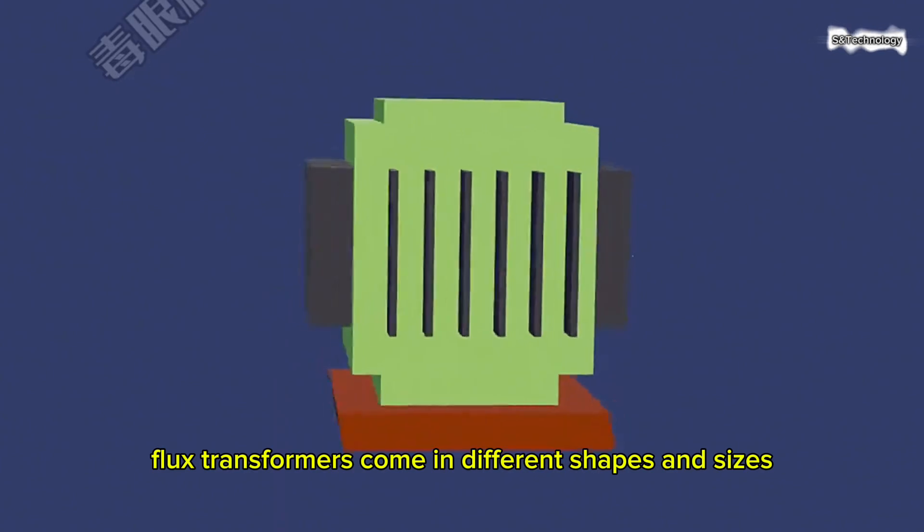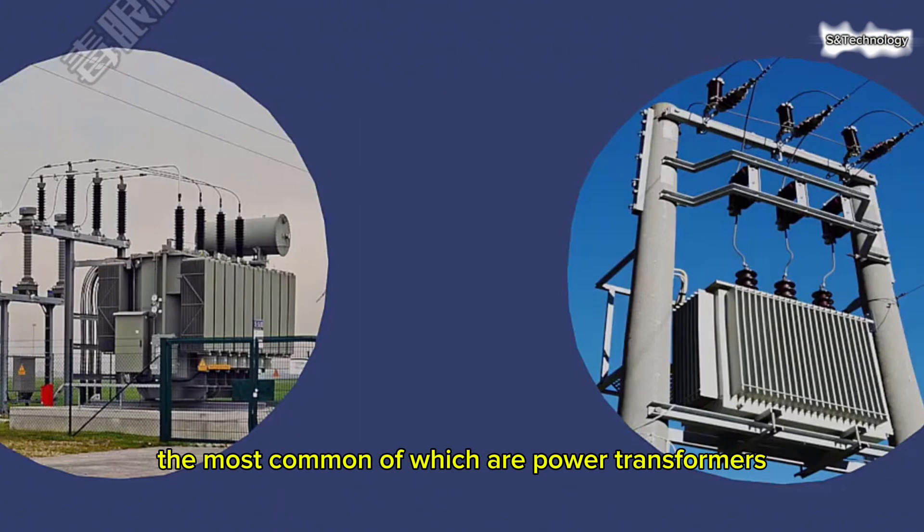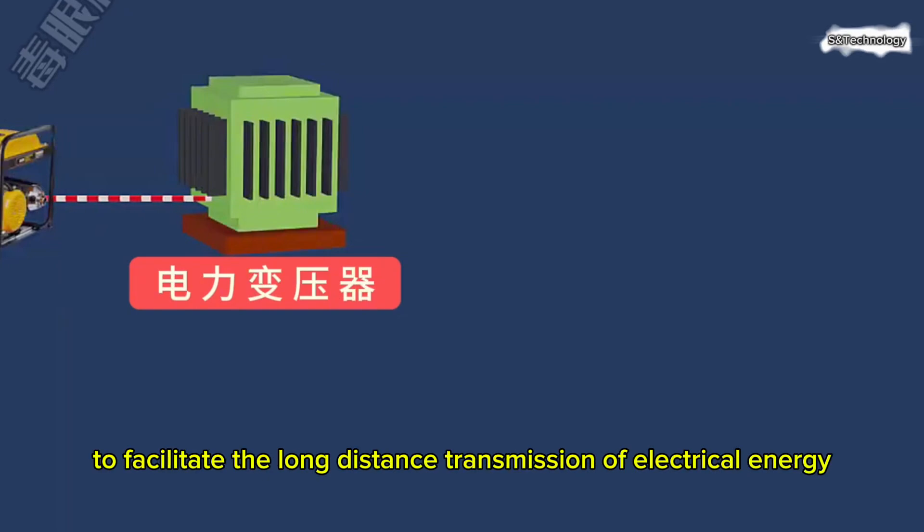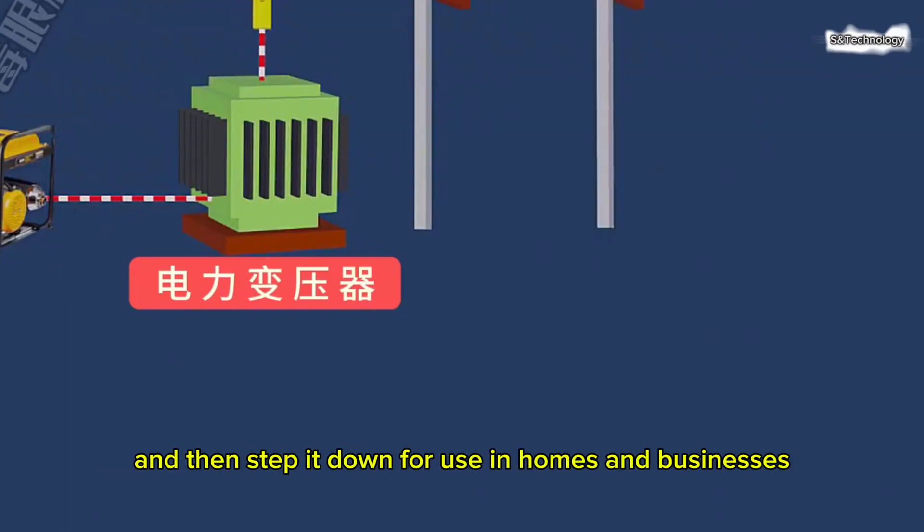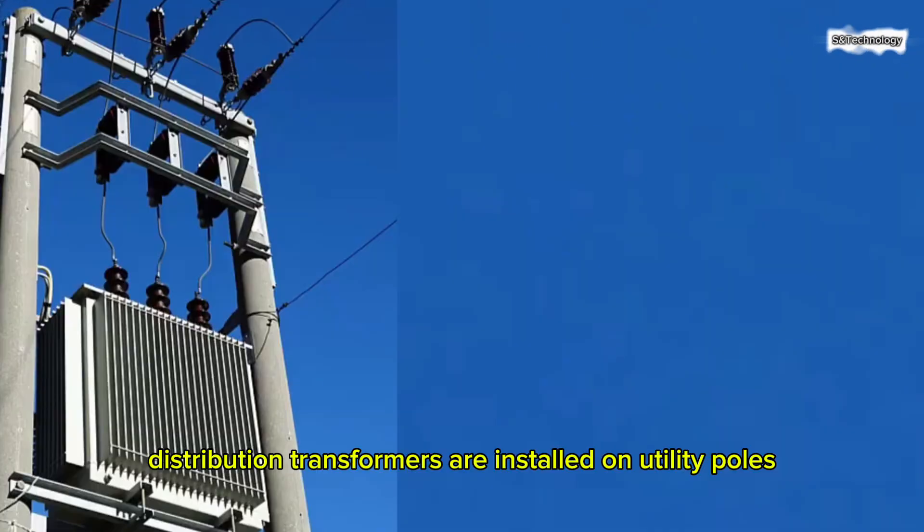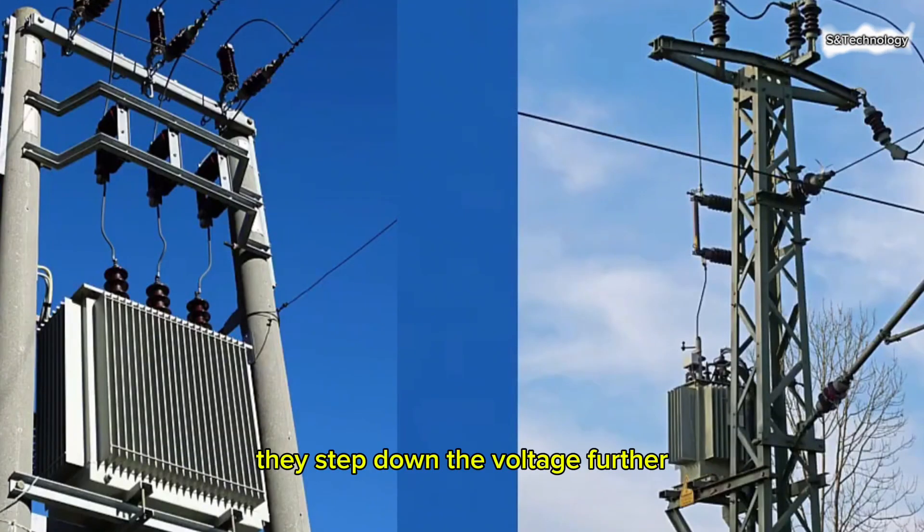Transformers come in different shapes and sizes, the most common of which are power transformers and distribution transformers. Power transformers are used to step up the voltage to facilitate the long-distance transmission of electrical energy and then step it down for use in homes and businesses. Distribution transformers are installed on utility poles. They step down the voltage further for direct use by consumers.